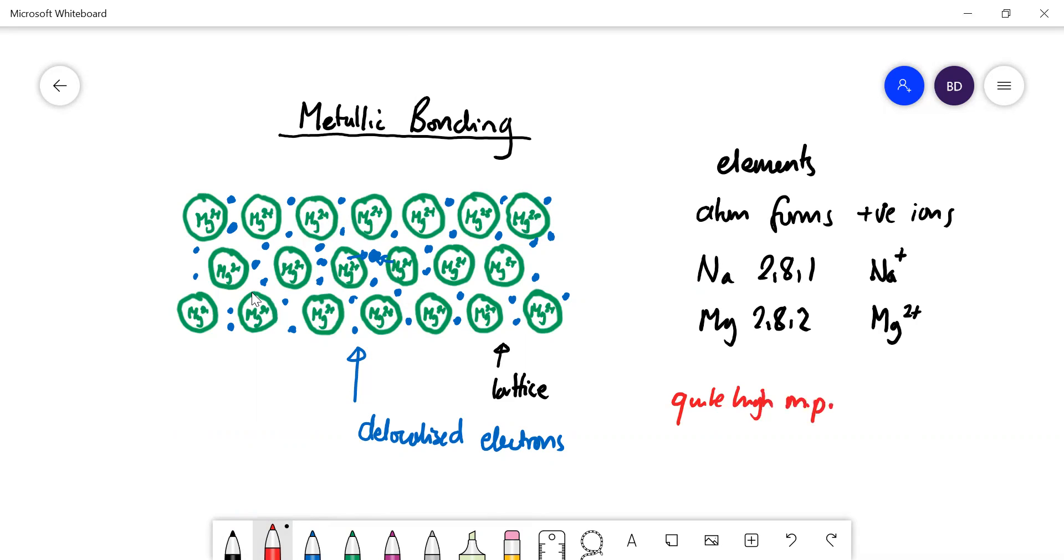So that tells us that the forces of attraction holding the lattice together are relatively strong. Those interactions between the positive ions and the delocalized electrons are pretty strong and very important.